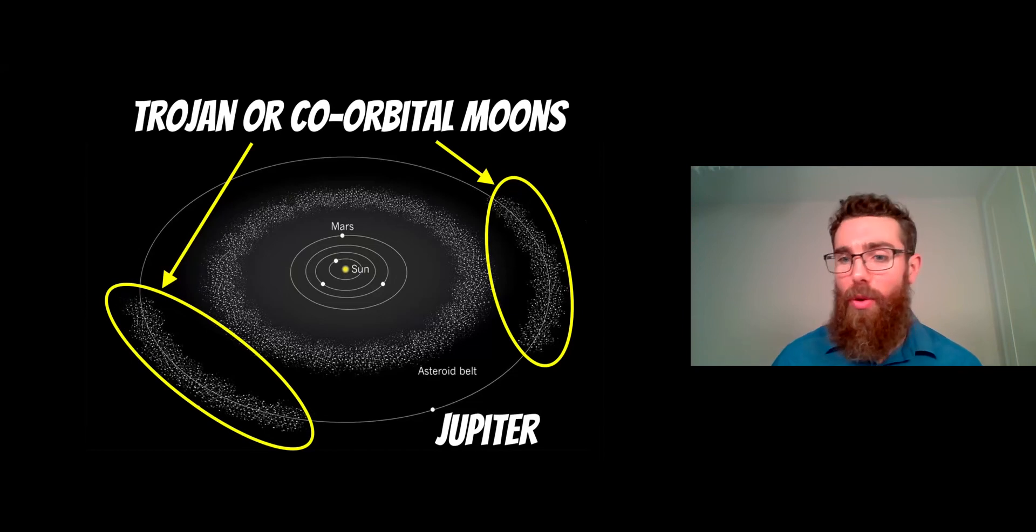They're also co-orbital moons because they share the same orbit as Jupiter, and they always stay in that location. You've got these rather large groups of them.